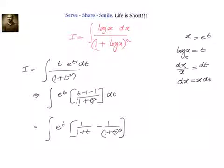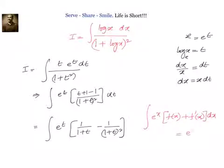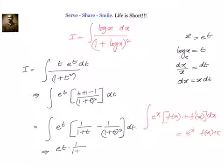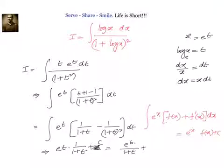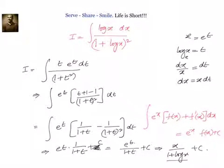This is in the format of integral of e power x into f of x plus f dash x dx, and we know the solution for that is e power x into f of x plus c. So the solution here will be e power t into 1 by 1 plus t plus c, which is e power t by 1 plus t plus c. But e power t is x and 1 plus t is 1 plus log x. So our answer is x by 1 plus log x plus c.